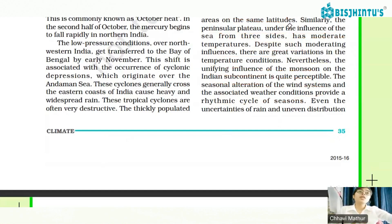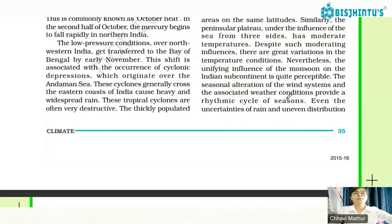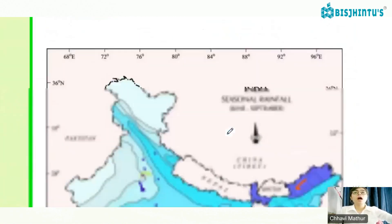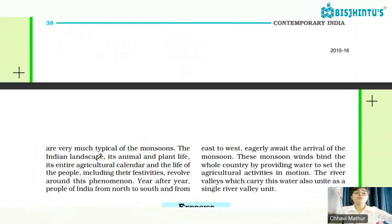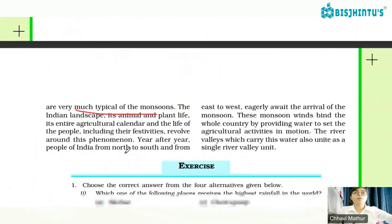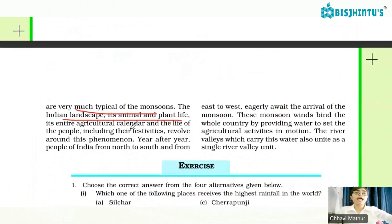That is what is the very beautiful part of it — this particular feature of a cycle of seasons. Even the uncertainties of rain and uneven distribution are very much typical of the monsoon. The Indian landscape, its fauna and flora, its entire agricultural calendar and the life of people, including their festivities, revolve around this phenomenon.